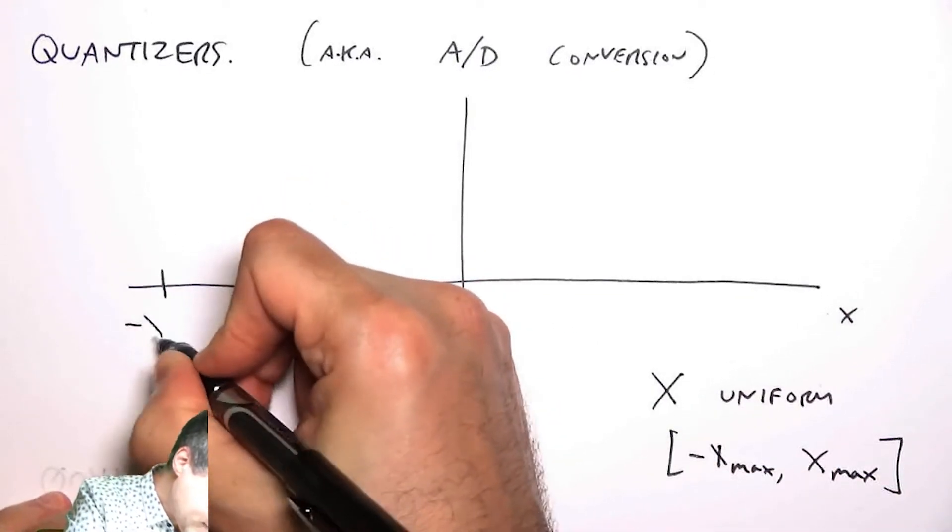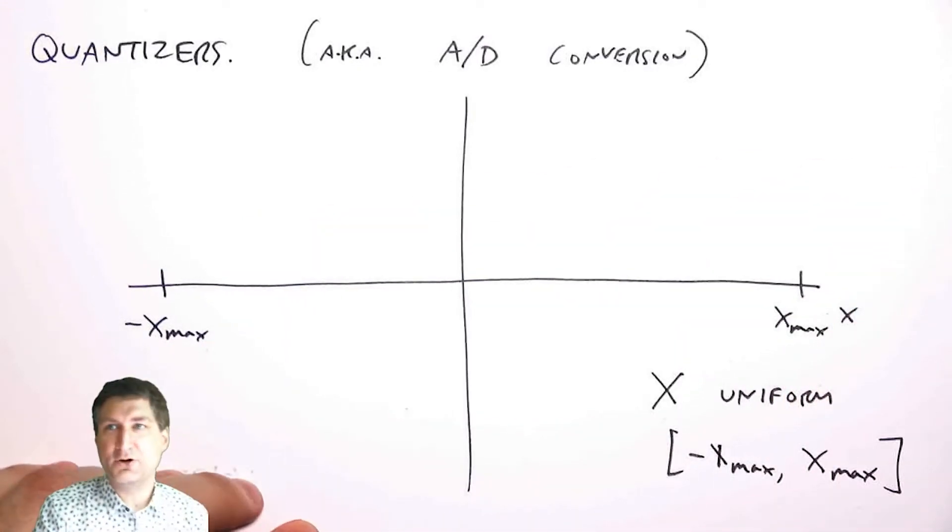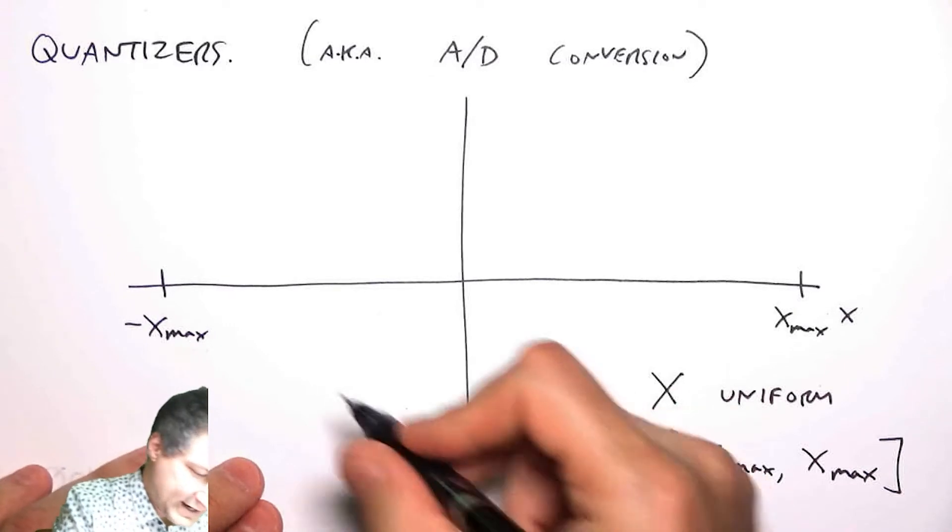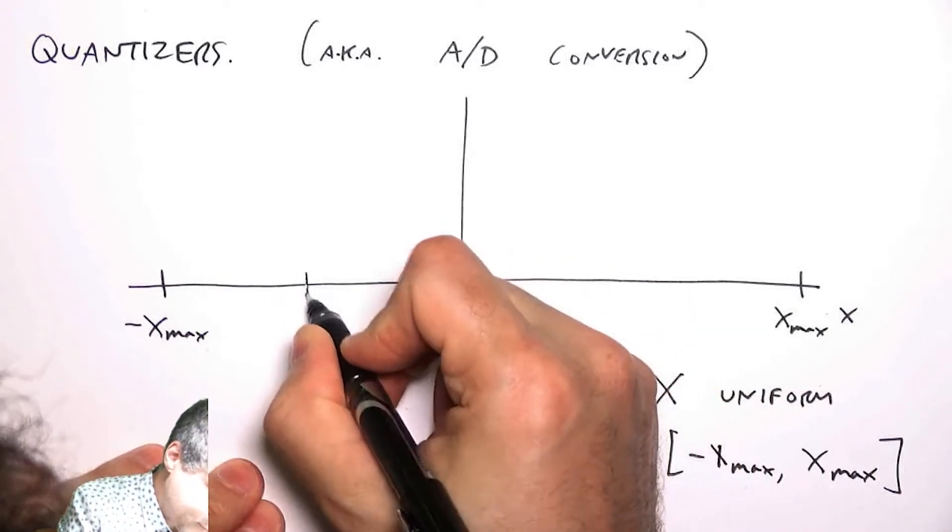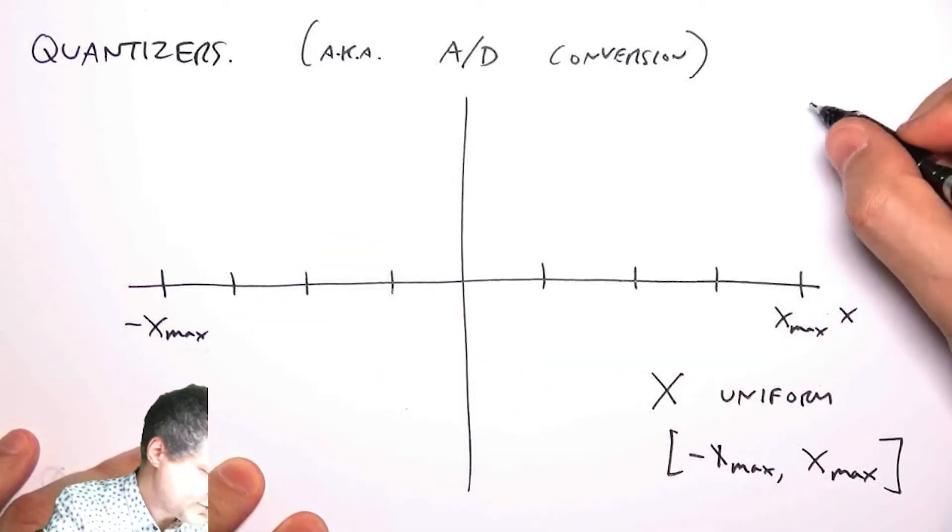So I have minus X_max over here and plus X_max over here, and so what I'm going to do is I'm going to represent this by a discrete signal that I'm going to get by chopping this interval up into some number of bins.